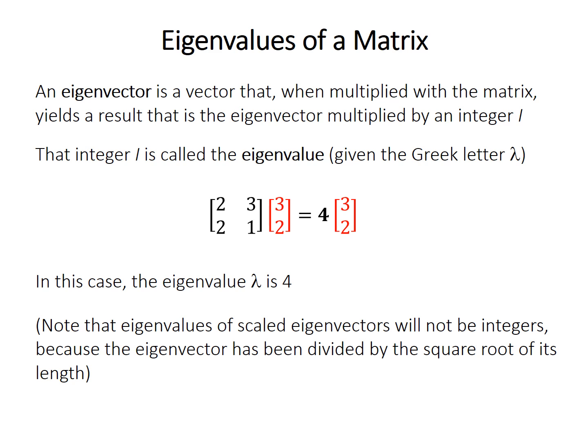It can be a little confusing sometimes. In the example I demonstrated, the eigenvalue is 4. But most eigenvalues you'll see are not integers because we've scaled the eigenvectors to have a length of 1 as opposed to their original length.